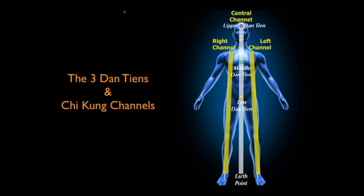Now, the left and right channels of this diagram are a bit simplified, but they are correct — there's more to it. The left and right channels from the top: as heavenly energy enters the body from the top of the head, the central channel and left and right channels are combined, and stay combined until they reach the upper dantian.